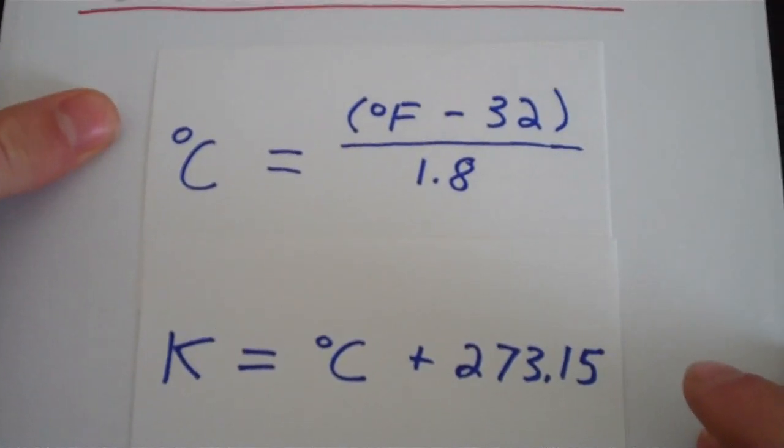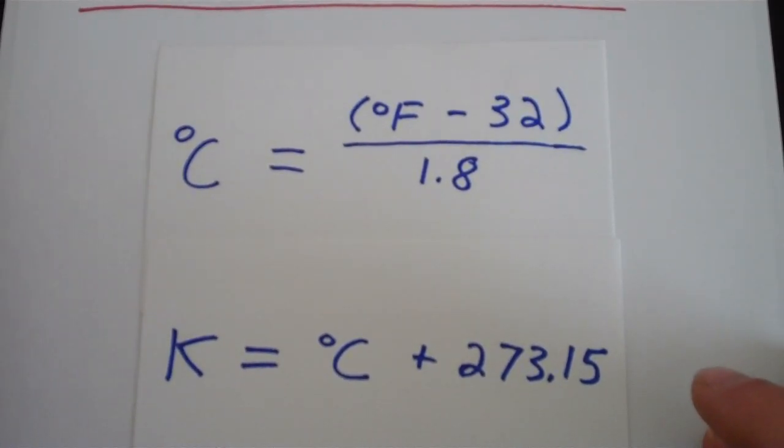So the top one says degrees Celsius equals degrees Fahrenheit minus 32 over 1.8. So all you need to do is plug your known value into this equation and then solve for your unknown.